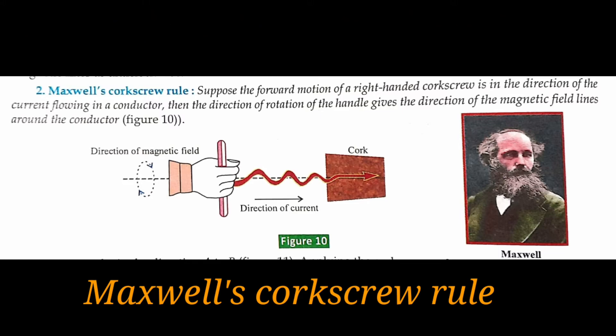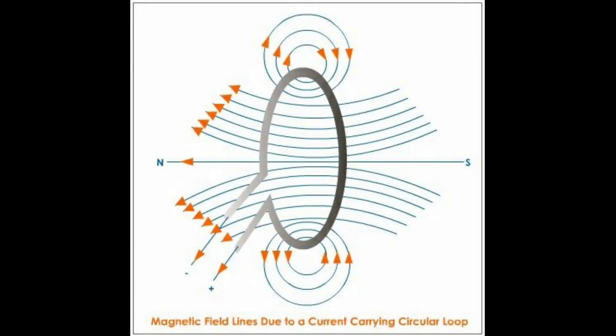Soon after Oersted's discovery of the magnetic effect of a current-carrying wire, Ampere found that a loop of wire also had a magnetic field. A loop is a ring-shaped structure. If a straight wire is bent into a circular loop and current is passed through it, every point on the wire carrying current gives rise to a magnetic field appearing as straight lines at the center of the loop.